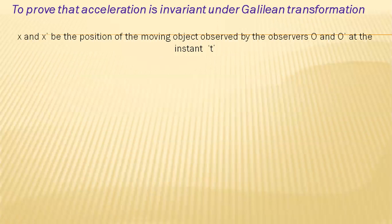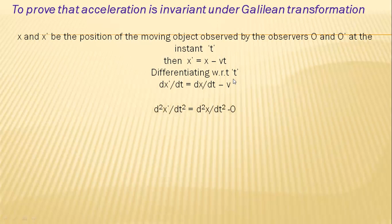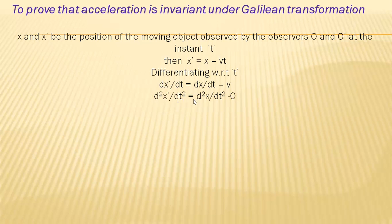Now let us prove that acceleration is invariant under Galilean transformation. We know that x' = x − vt. Differentiating with respect to time gives dx'/dt = dx/dt − v. Differentiating again gives d²x'/dt² = d²x/dt², therefore a' = a.